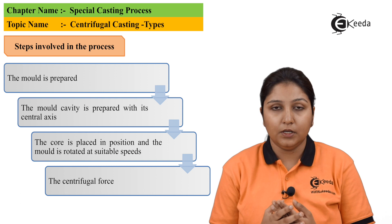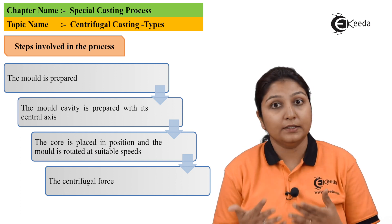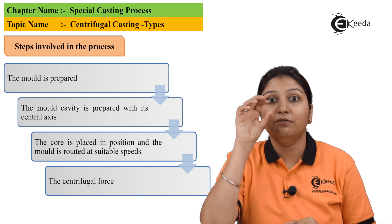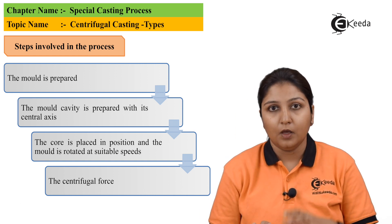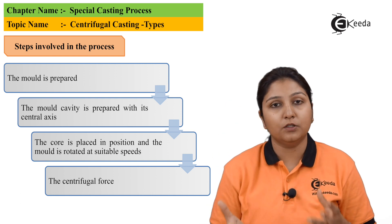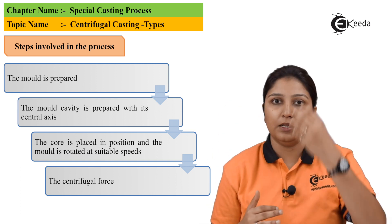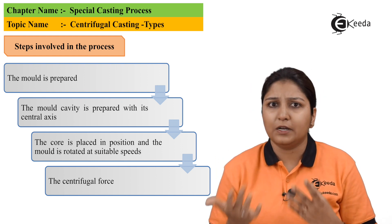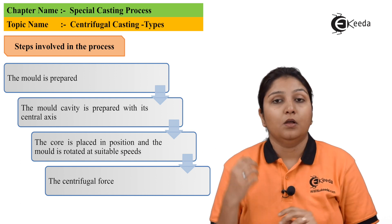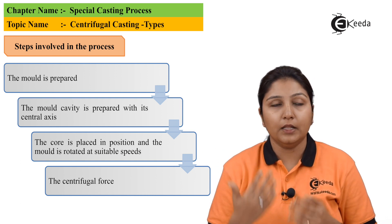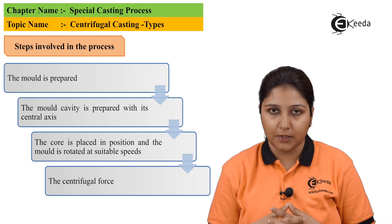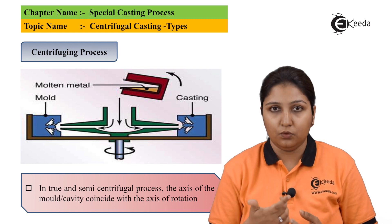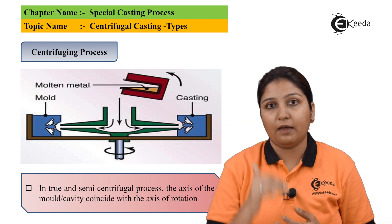Going step by step: firstly, your mold is prepared — your exact mold, how the shape is to be cast. Then your mold cavity is prepared along the vertical axis. In your cavity, you place your core so that the material comes and occupies the space around the core. Your centrifugal force is being applied — the object is moving in the vertical direction and centrifugal action takes place. This is a centrifuging process in which the axis of your centrifugal force coincides with your mold cavity axis.